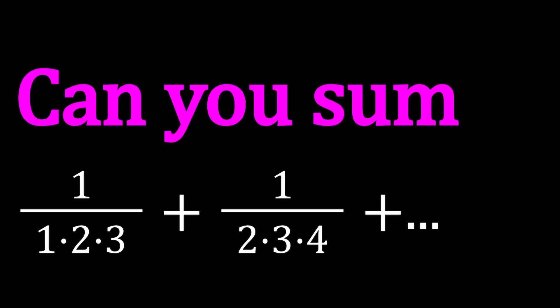Like 1, 2, 3, 2, 3, 4, 3, 4, 5, so on and so forth. And this goes on forever. So this is an infinite sum, and we're going to evaluate it. So this is supposed to converge, right?